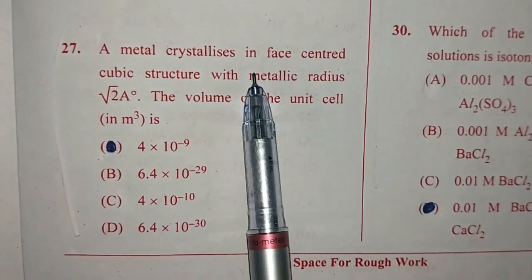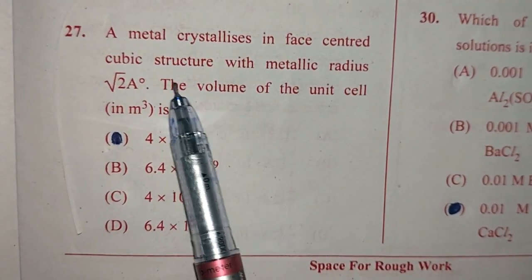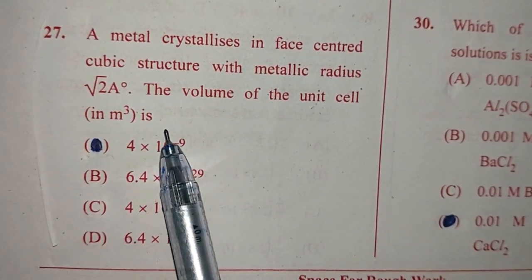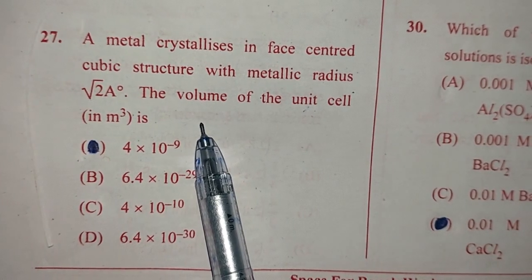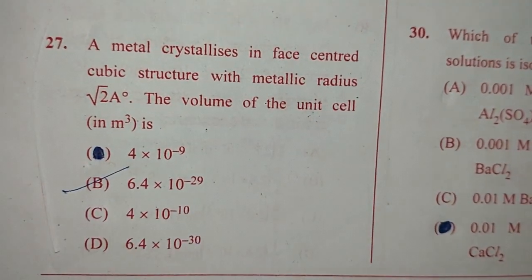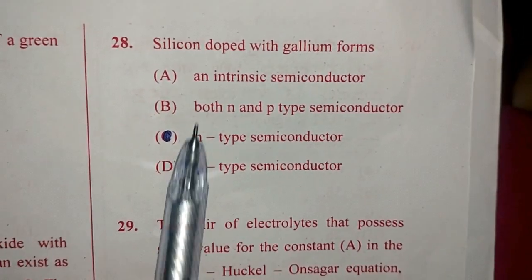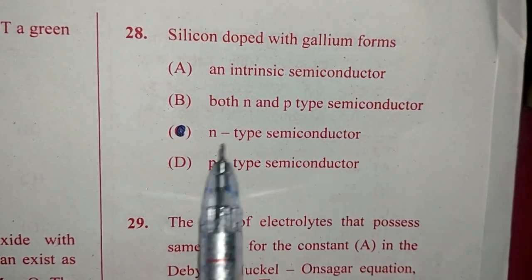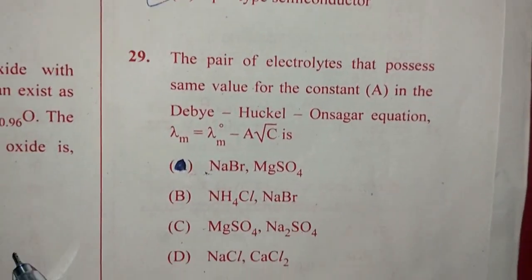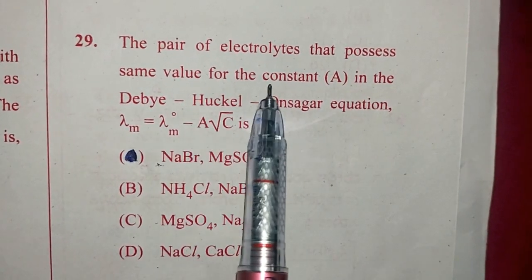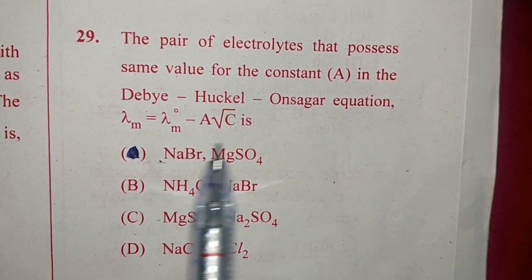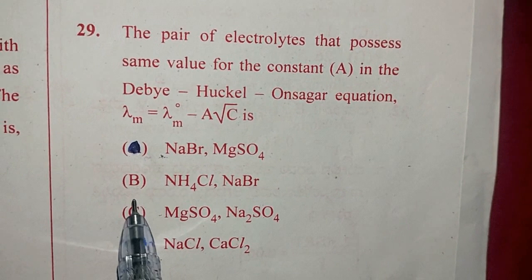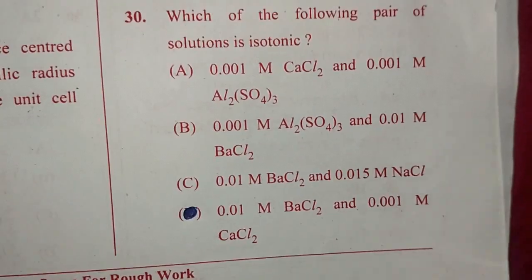Question number 27. A metal crystallizes in face centered cubic structure with metallic radius root 2 angstrom. The volume of the unit cell in meter cube is? The answer is B, 6.4 into 10 to the power minus 29. Question 28. Silicon doped with gallium forms P-type semiconductor because gallium is a group 13 element. So answer is option D. Question 29. The pair of electrolytes that possesses same value for the constant A in the Debye-Huckel-Onsager equation lambda M equals lambda M0 minus A into root C is option B, NH4Cl and NaBr.